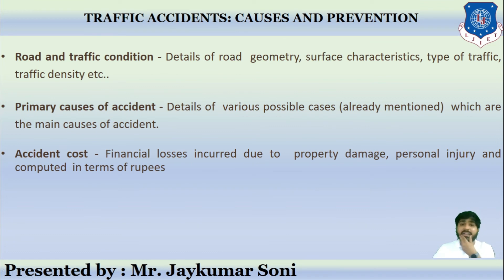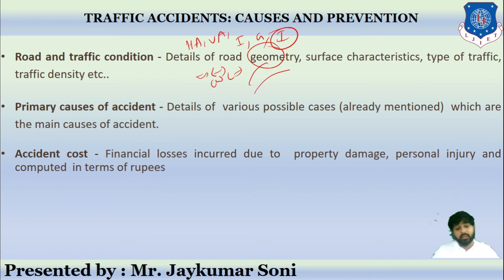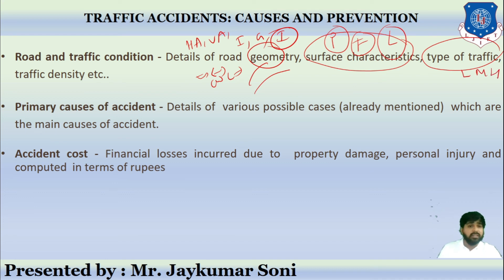Road and traffic condition data is also collected, including road geometry details: horizontal alignment, vertical alignment, type of intersections provided, geometry of rotaries, whether the carriageway and shoulders are of sufficient width, mechanical widening and psychological widening provisions, surface characteristics such as wet conditions, pavement friction, light-reflecting characteristics of the pavement, and traffic type — low, medium, or heavy — along with traffic density.